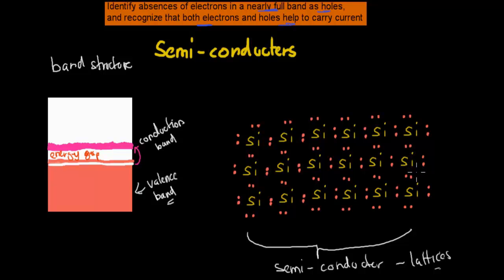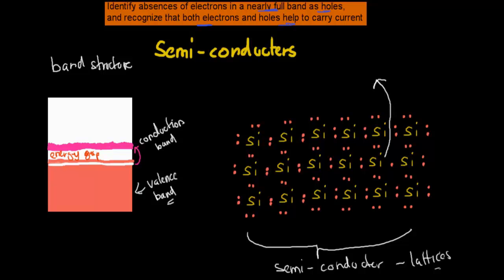Their valence shells can overlap, which means some of them will have less energy and some will have more energy. The ones that have more energy are the ones which will jump from the valence band into the conduction band. So for example, let's say this one here has gained enough energy and will now jump into the conduction band — it moves up and is now in the conduction band, where it can float around freely.